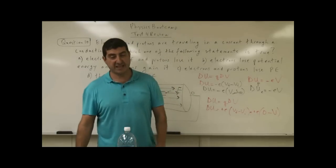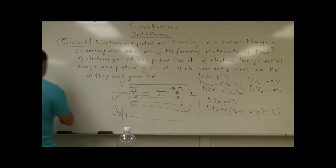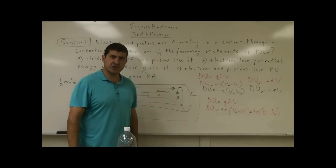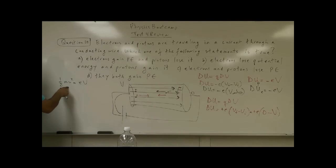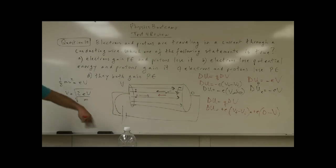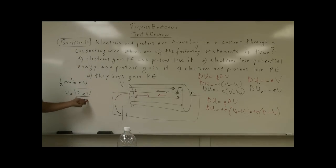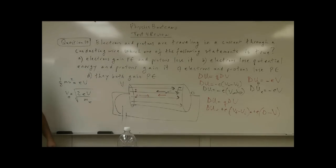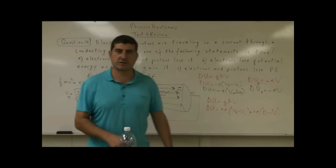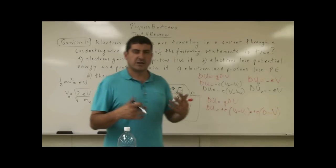Because both lose potential energy, they both gain kinetic energy: ½mv². The potential energy lost, eV, is converted into kinetic energy. Therefore their final velocity is v = √(2eV/m). Of course the electron's mass is much much lower, so the velocity of the electron will be much much higher, while the proton's greater mass means it moves much more slowly.